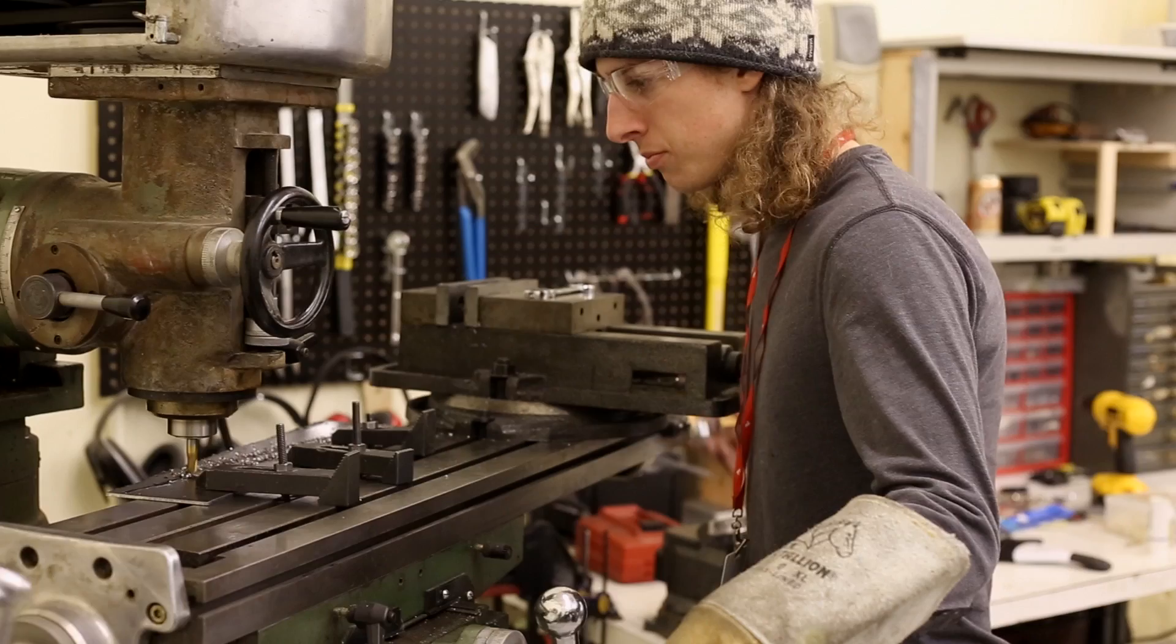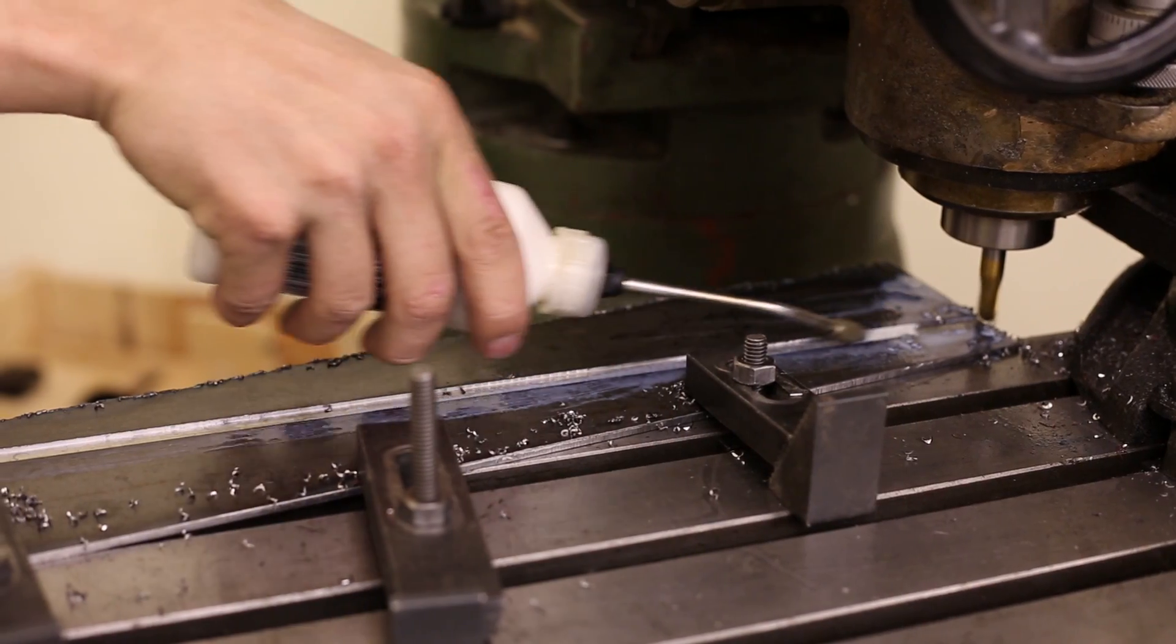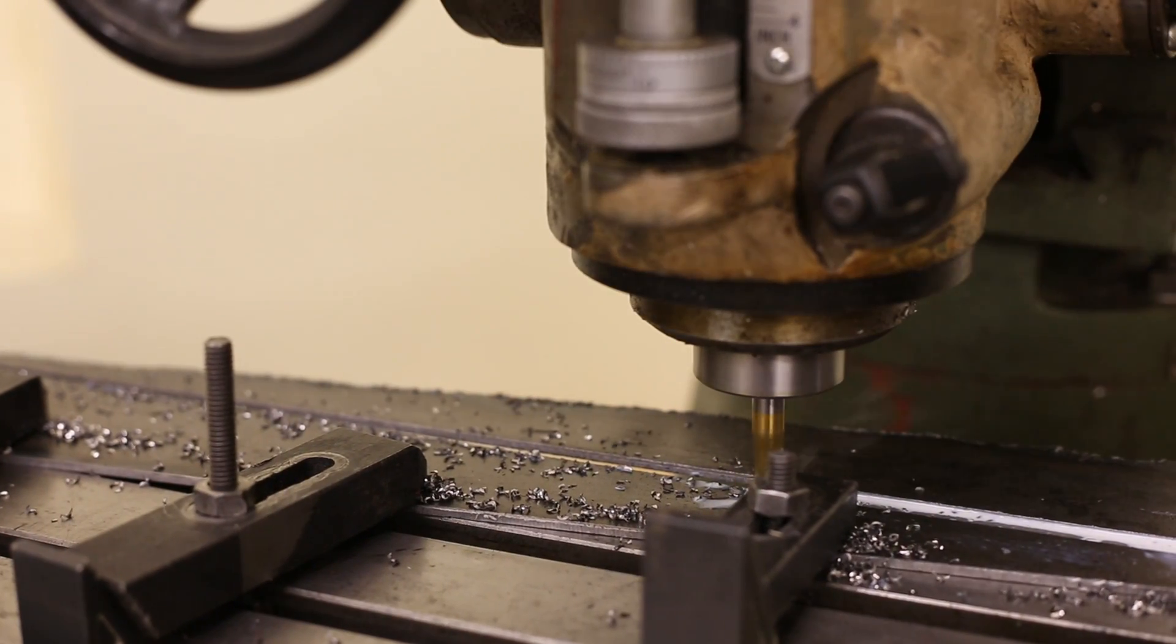When I use the mill and I'm cutting metal, there needs to be some type of coolant to cool the bit. Normally, I use cutting oil, but the disadvantage of that is it's smelly and it's also somewhat expensive.